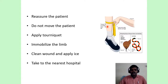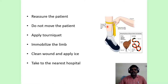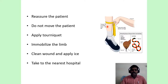For snake bite management, reassure the patient — tell them the venom takes some time to act, there is no need to panic, antivenom is available and the patient can be treated. Do not move the patient; do not allow them to walk or run. Apply a tourniquet just above the wound, tight enough to obstruct lymphatic flow but loose enough to allow blood flow normally. Every 10 minutes, loosen and reapply the tourniquet. Immobilize the limb like a splint — one joint below and one joint above must be immobilized.